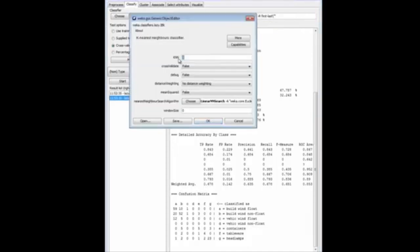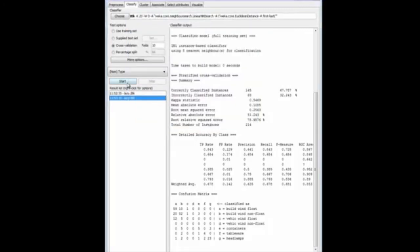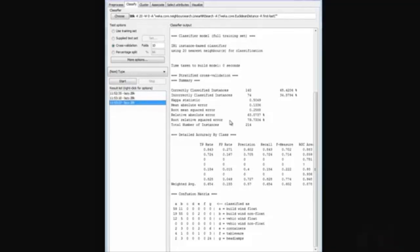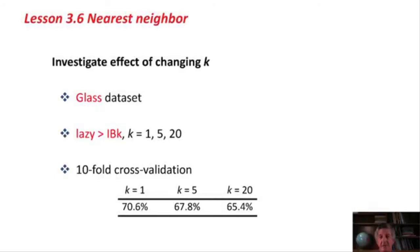If we change it to 20, and run it again, we get 65% accuracy, slightly worse again. If we had a noisy data set, we might find that the accuracy figures improved as k got a little bit larger.